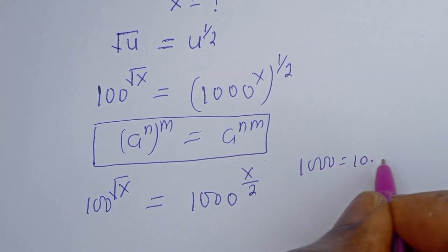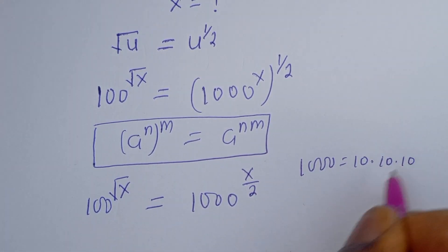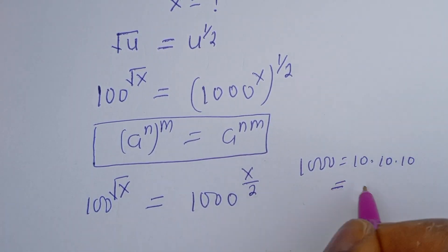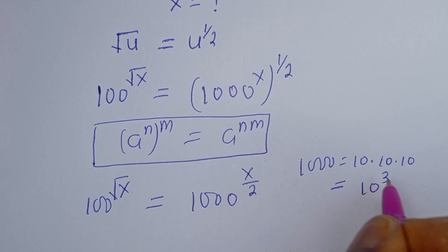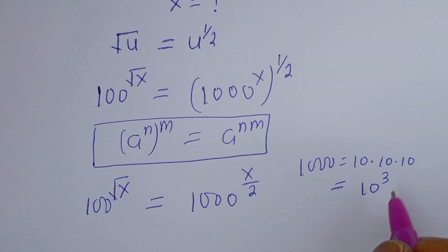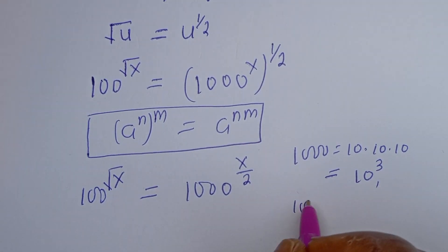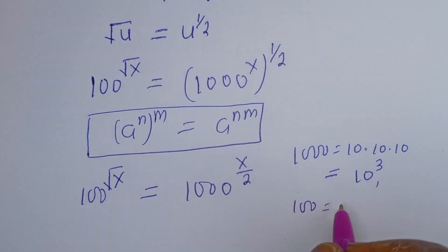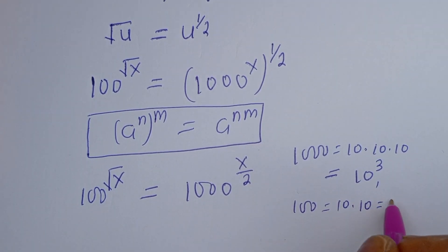Now take note that 1000 is equal to 10 times 10 times 10, which is equal to 10 to the power of 3. And also 100 is equal to 10 times 10, which is equal to 10 squared.